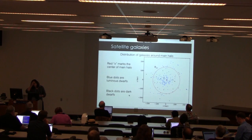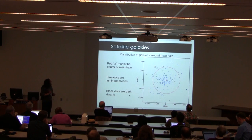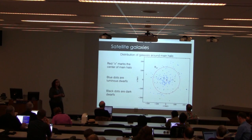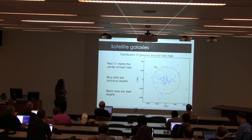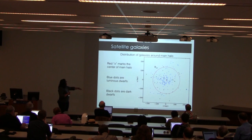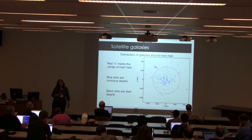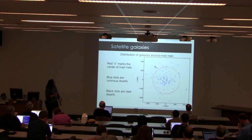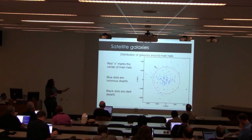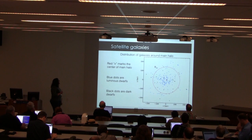Since we're talking about satellite galaxies, we're going to look at their distribution around the main halo to show where these galaxies live. This is shown in X-Y kiloparsecs, where the X marks the center of the main halo and the red circle is the virial radius of that halo, giving a picture of where these sub-halos live.